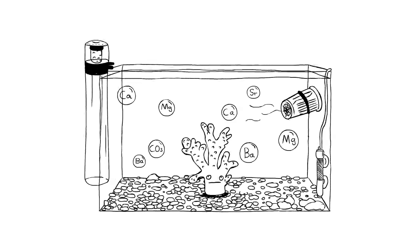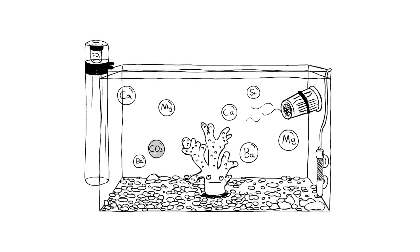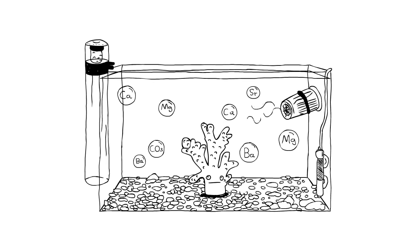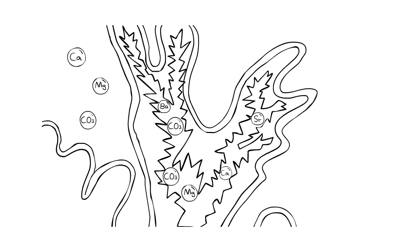The five foundation elements include the major elements calcium, magnesium, and carbonate, as well as the trace elements strontium and barium, that together are the basic building blocks of coral skeleton.